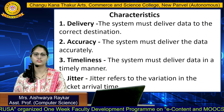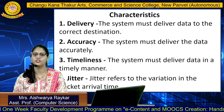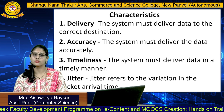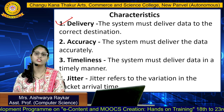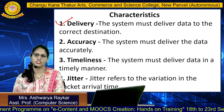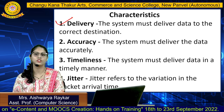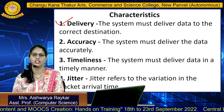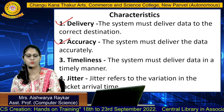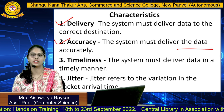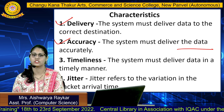Now let's discuss a few fundamental characteristics of data communication. The first is delivery — the system must deliver the data to the correct destination, meaning the data should be delivered to the intended recipient only. Next is accuracy — the system must deliver the data accurately, and the data should not get altered during transmission.